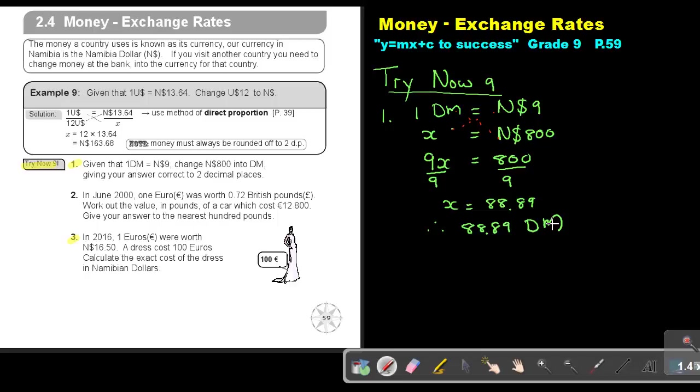And then number 3. In 2016, 1 Euro were worth 16.50. A dress cost 800 Euros. Calculate the exact cost of the dress in Namibian dollar.